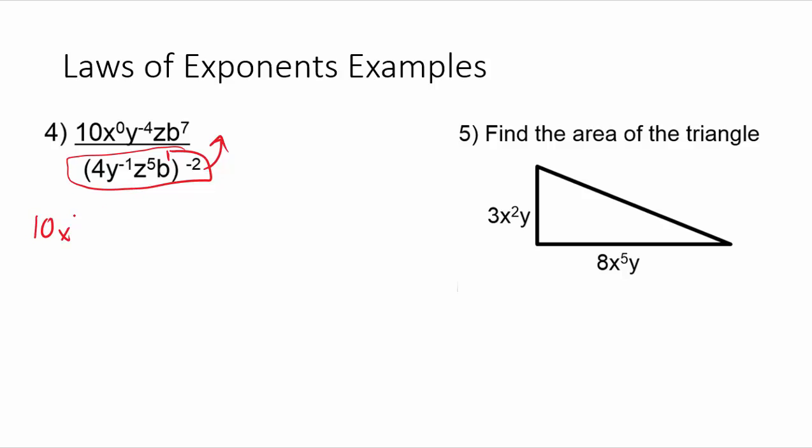So this would be, let's just keep this 10x to the zero, y to the negative fourth, z, b to the seventh. And all I'm doing is I'm moving this 4y to the negative one, z to the fifth, b, up to the top, and making this a positive two. And that takes care of the exponent here, because that whole thing that was to a negative exponent is now in the top of the fraction. Now, again, order of operations. I cannot multiply this 10 in yet. I'm going to need to take care of this part first. I need to square this first.